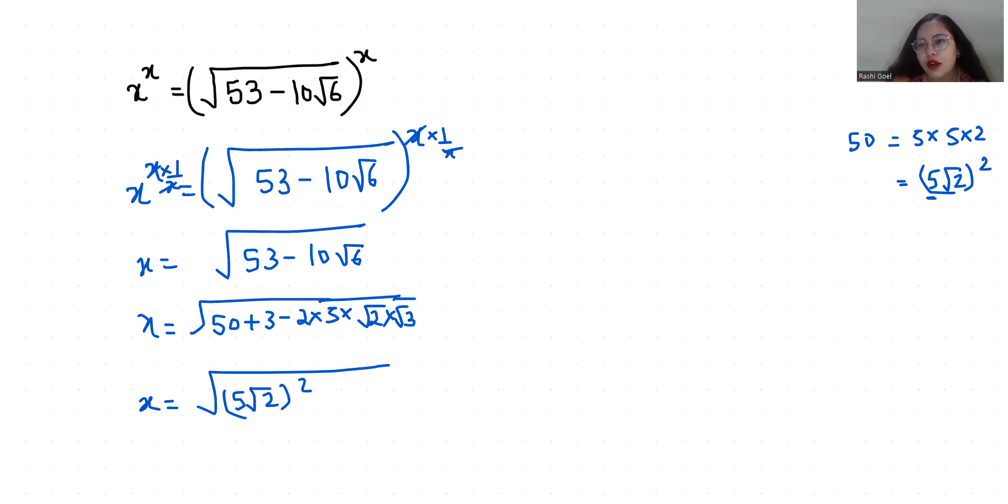Similarly this 3 as root 3 squared, minus 2 times, this I can write as 5 root 2 times root 3.